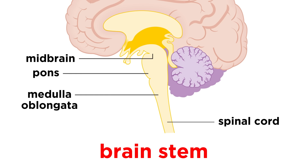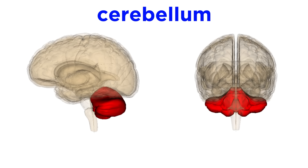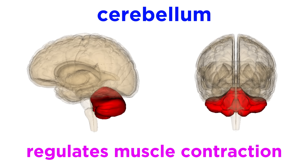After the diencephalon, we get to the brainstem, which consists of the midbrain, pons, and medulla oblongata, the last of which blends into the spinal cord. Finally, we get to the cerebellum. This region, which consists of two hemispheres, regulates muscle contraction to generate smooth, coordinated motion.